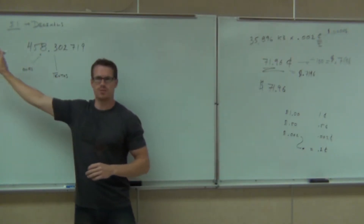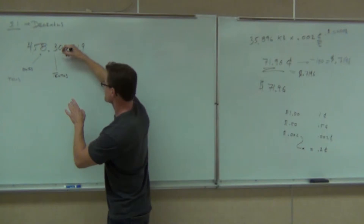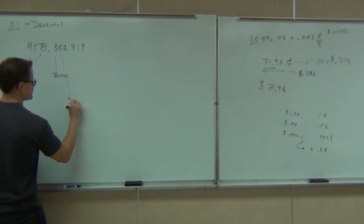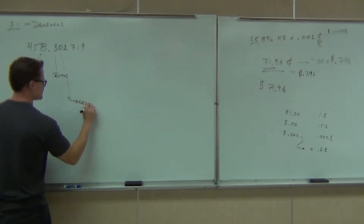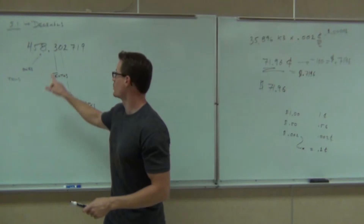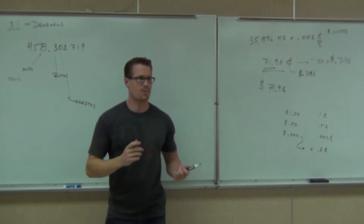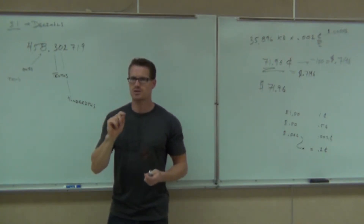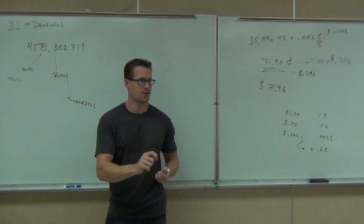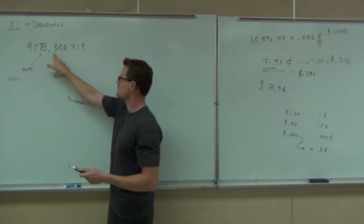The next one works very much like this side of the place value. Here we went ones, tenths — there's no one-ths, but there's tenths. The next one is hundredths. Here's what hundredths mean: it would take one hundred of this place value to get one whole value. Just like pennies — one penny is .01. How many pennies are in a dollar? One hundred. That's why it's one hundredth of a dollar. It takes one hundred pennies to equal a dollar. So we have tenths, we have hundredths.